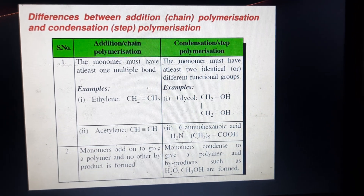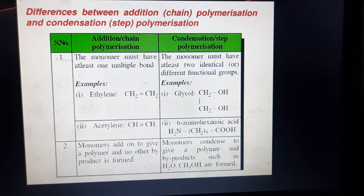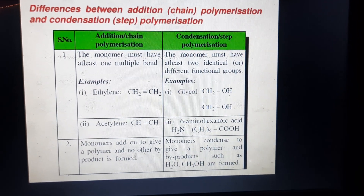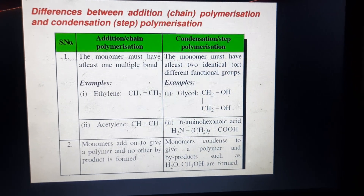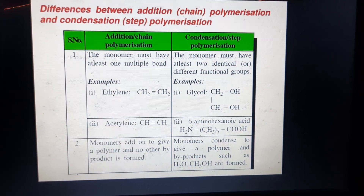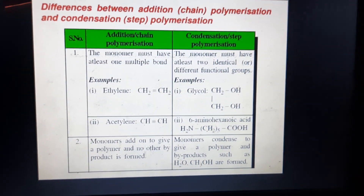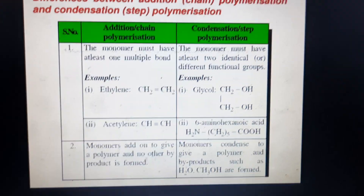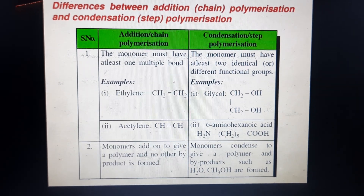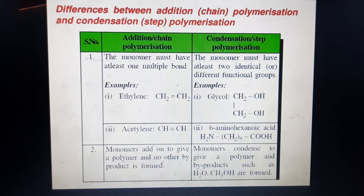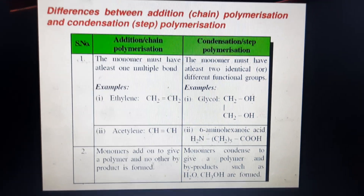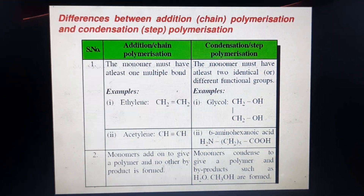Second point: in addition polymerization, monomers add on to give a polymer and no other byproduct is formed. In condensation polymerization, monomers condense to give a polymer and byproducts such as H2O and methanol are formed. So in condensation polymerization, elimination occurs, while in addition polymerization, no elimination occurs. This is a major difference between addition and condensation polymerization.